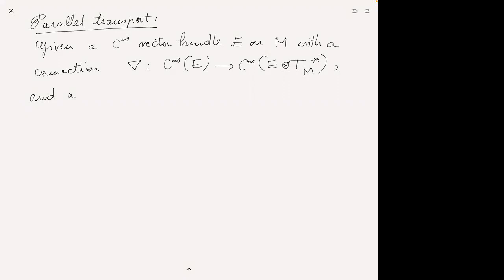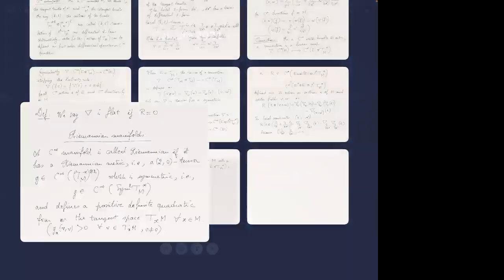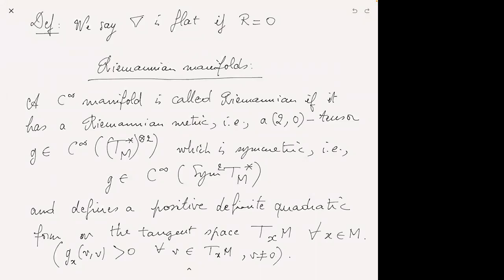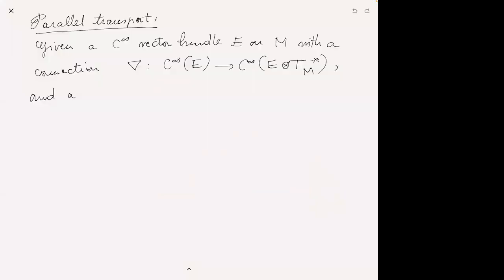We were talking about parallel transport. We have a Riemannian manifold, which means a manifold with a metric — a positive definite quadratic form on every tangent space of M, varying in a C-infinity way with the point of M. On our Riemannian manifold we give ourselves a C-infinity vector bundle and a connection on it. To do parallel transport, we also need a curve — we give ourselves a smooth curve.